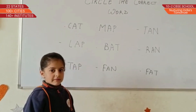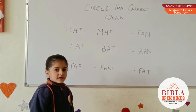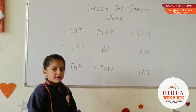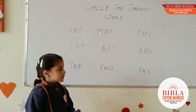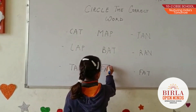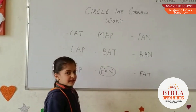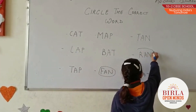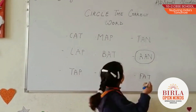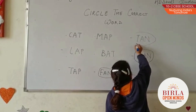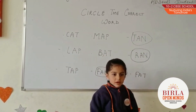Good morning, Saliha. Good morning. What activity are we doing today? Circle dark red words. Very good. Can you circle AN family words? F-A-L-E. Very good. L-A-L-E. Very good. L-A-L-E. Very good. Thank you, Saliha. You're welcome.